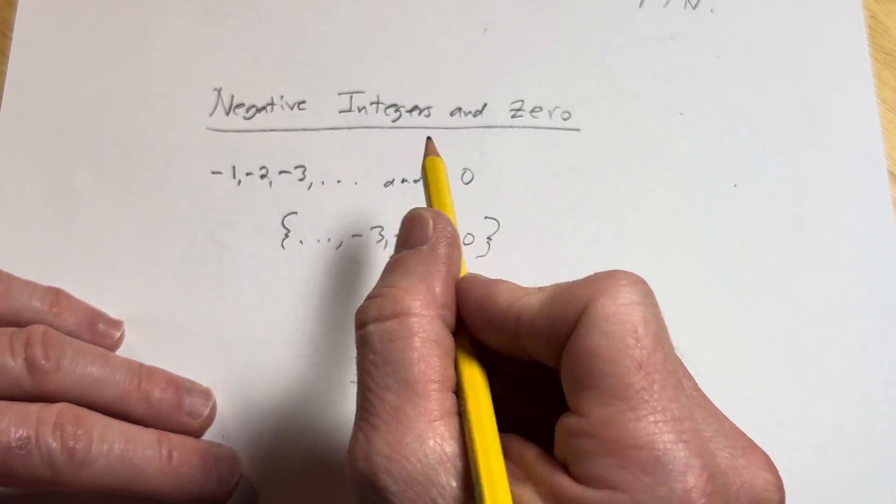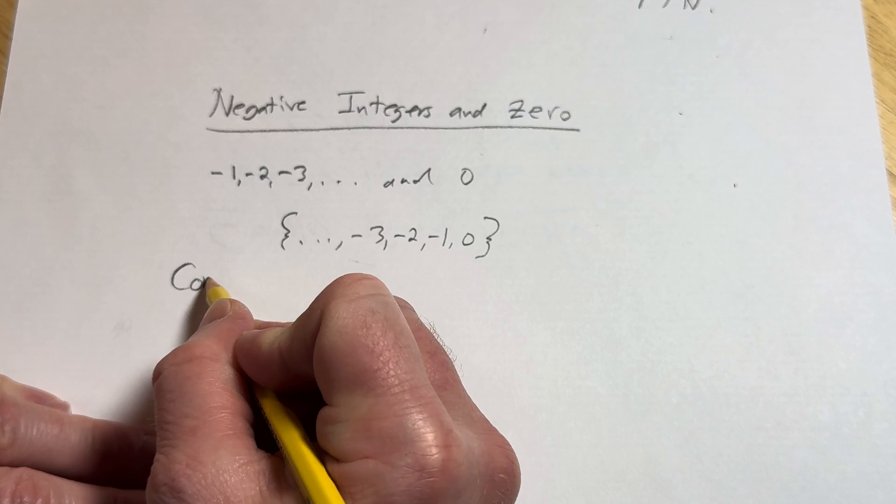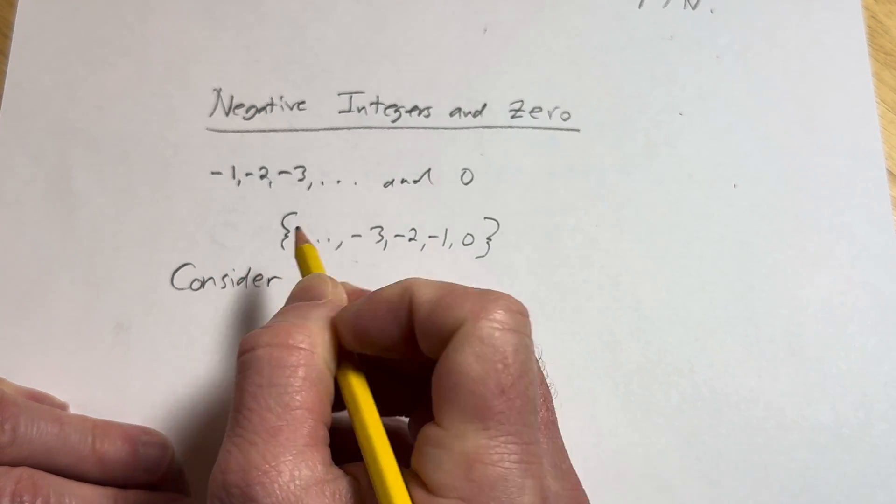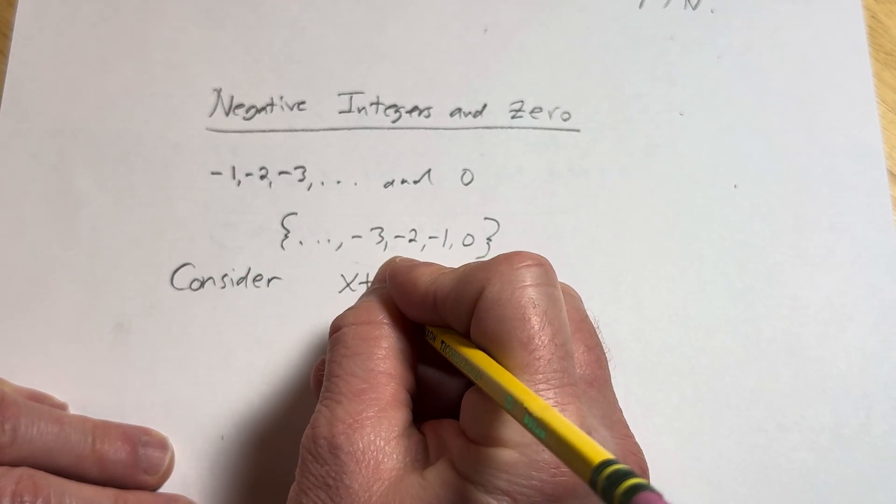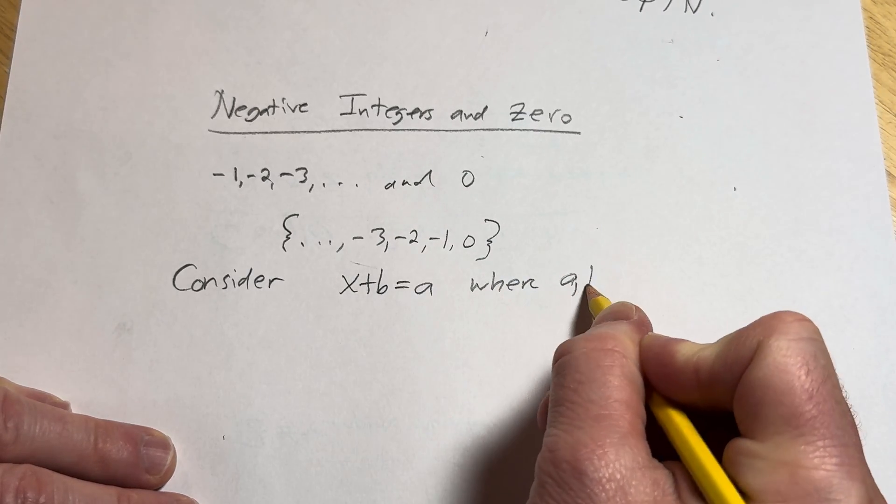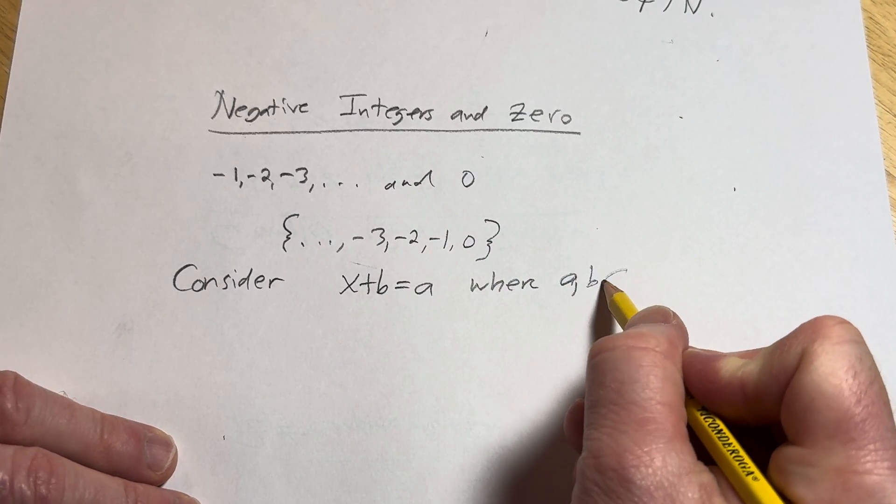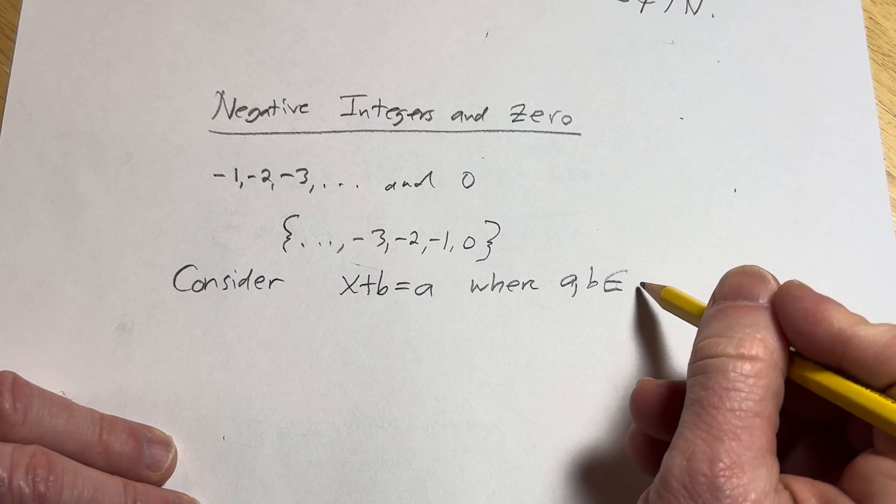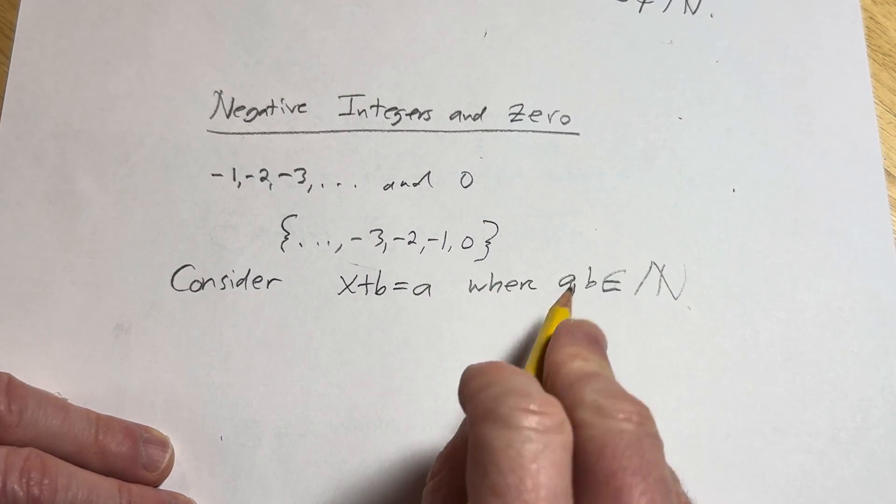And so where did this come from? Consider the equation x plus b equals a, where a and b are natural numbers. These are elements that belong to the set of natural numbers.